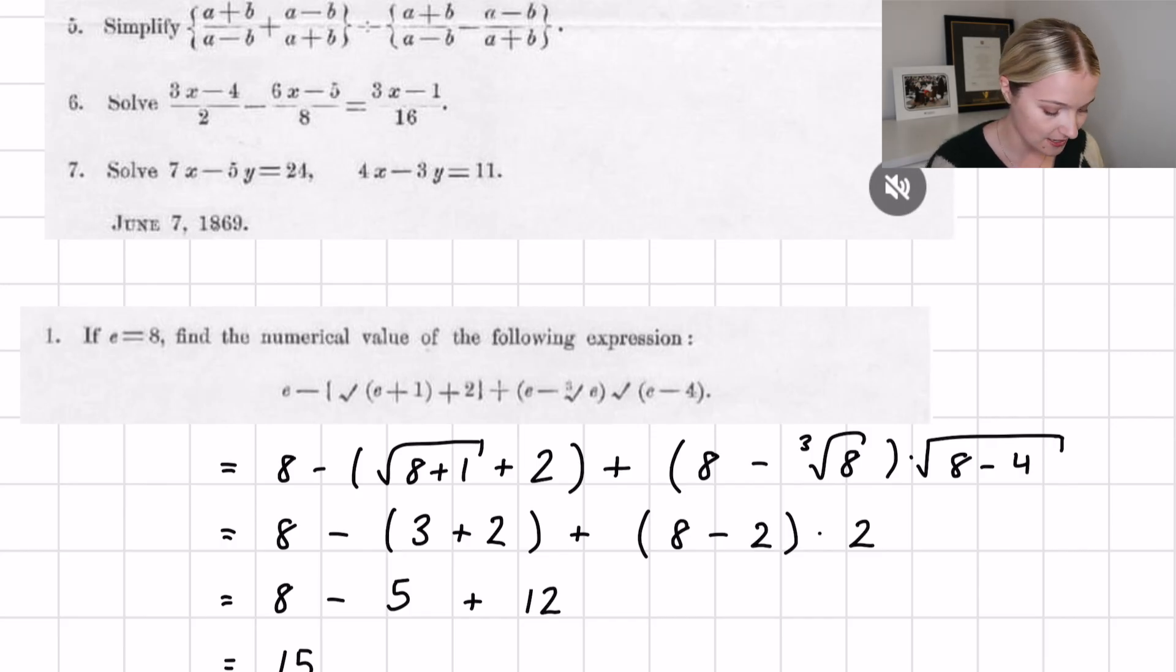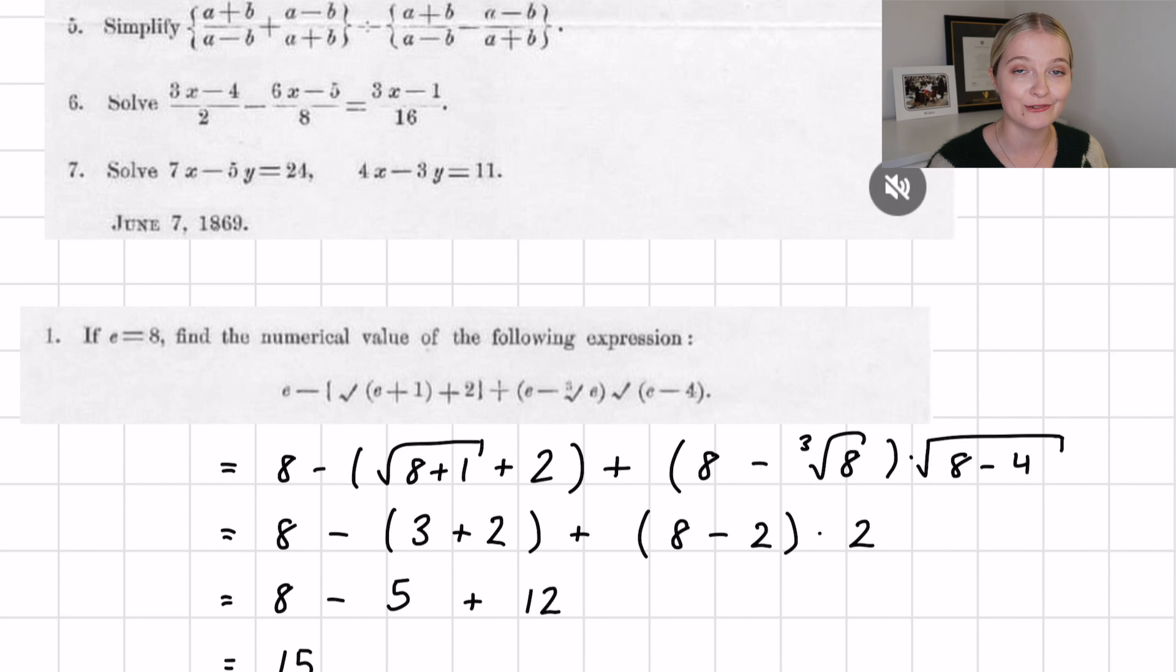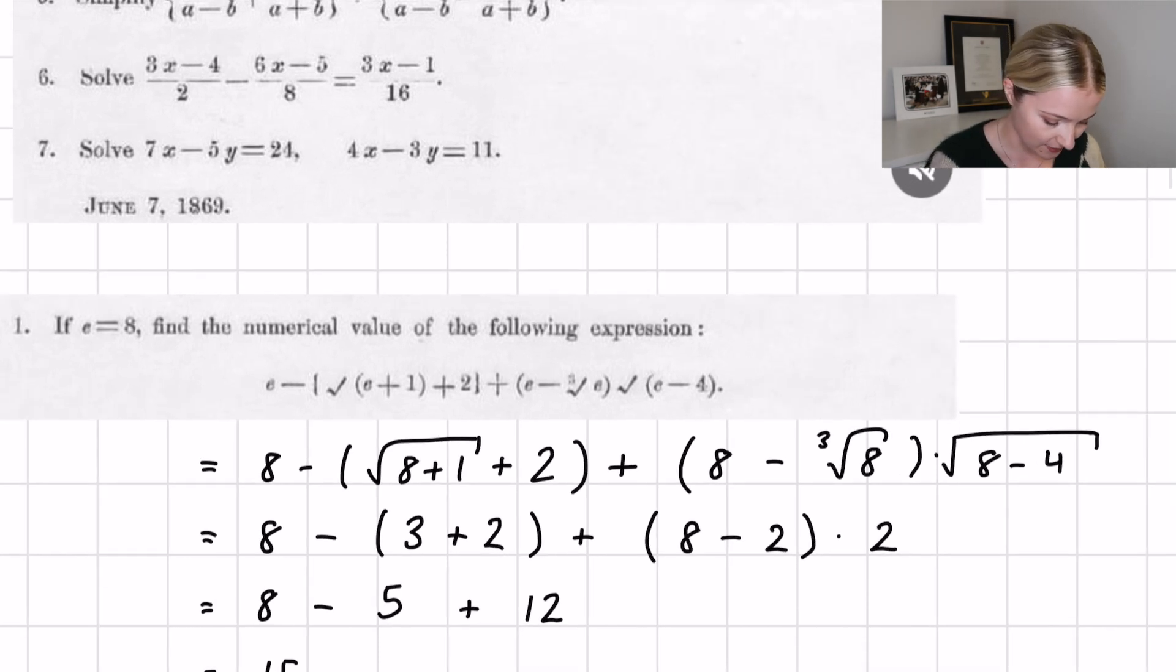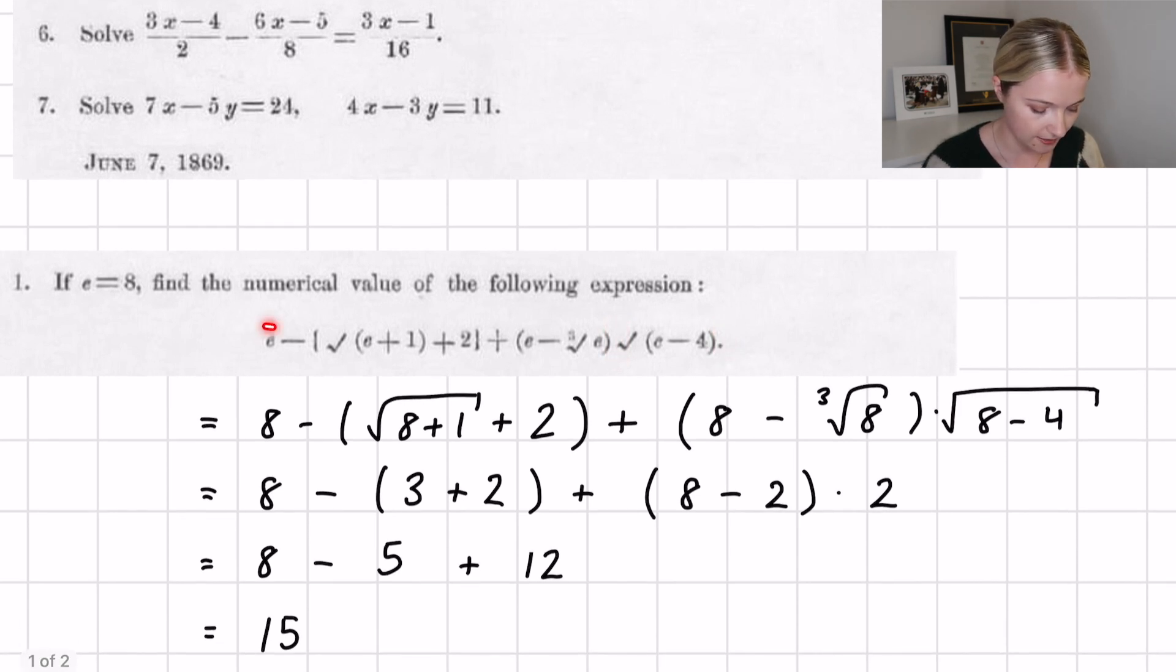The very first question just says if e equals 8, then we want to find the numerical value of the following expression, so we are quite literally just substituting e equals 8 into this here. Okay, so I think what was kind of hard for me to do this paper as well was the fact that I couldn't really read it too well. It was clearly a screenshot of a scanned copy of a paper, but we can see that we have an e here, this is a square root, we have a plus 2, we also have another e here, we have minus the cubed root of e, and this whole bracket here is multiplying a square root of e minus 4.